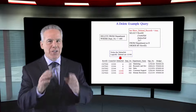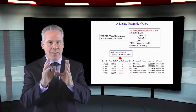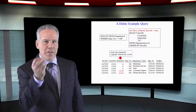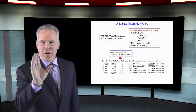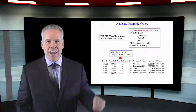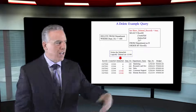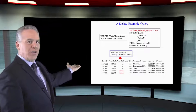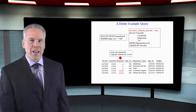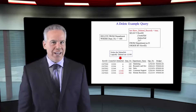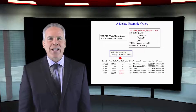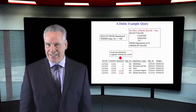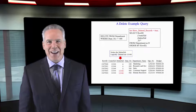Now we're going to delete from our table where the Depno is equal to 400. As you can see, we've got two rows that have a delete XID. They are logically deleted, just not physically yet.